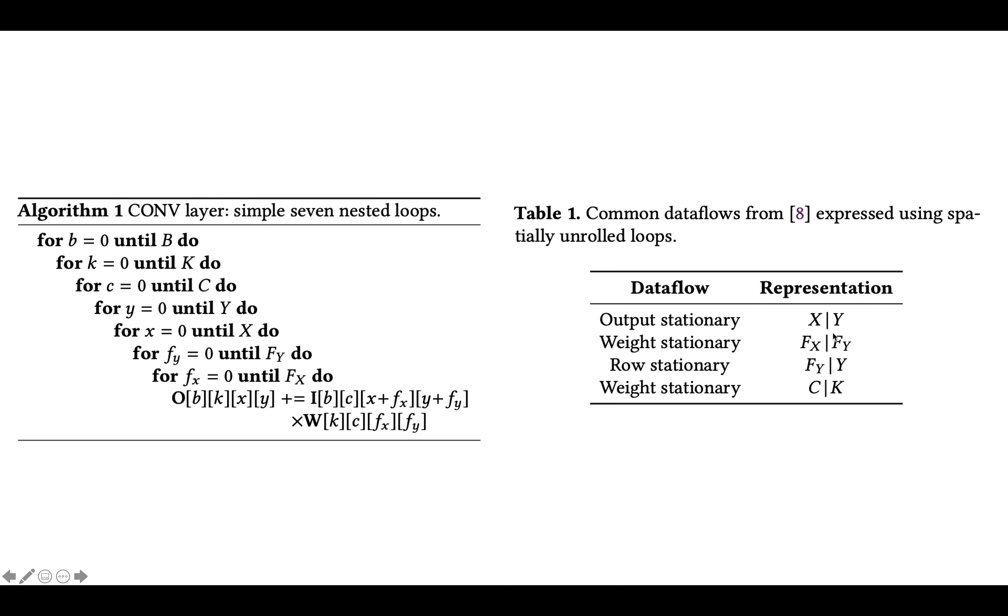And this is the loop nests that are unrolled onto the systolic array. So output stationary in their taxonomy means the x and y loops are unrolled onto the systolic array. Weight stationary means fx and fy, the filter for loops are unrolled onto the systolic array. So they're spatially allocated and stationary. Row stationary is fy and y, and weight stationary is c and k.